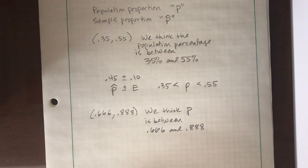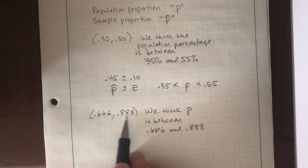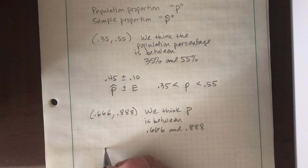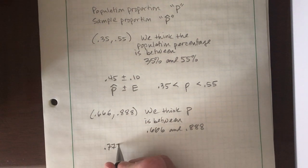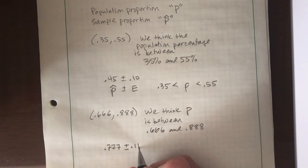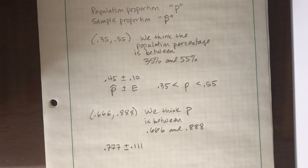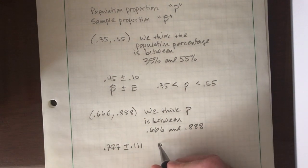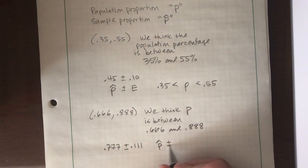So let's break this down. What was the sample proportion that gave us this? And the sample proportion is always the number exactly in between those two. If you took the average of 666 with 888, you would get 0.777 along with the margin of error of 0.111. So again, the structure of a confidence interval looks like p hat plus or minus e.